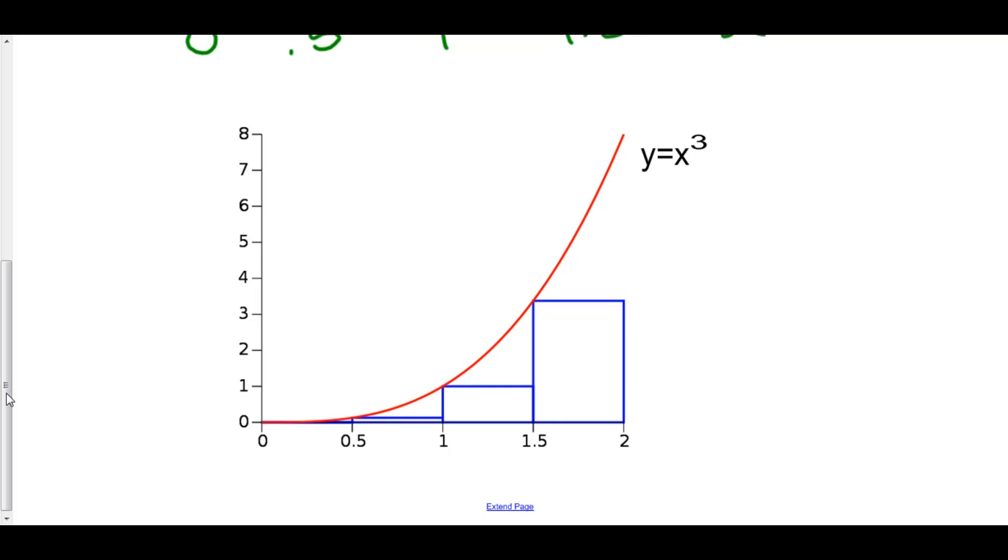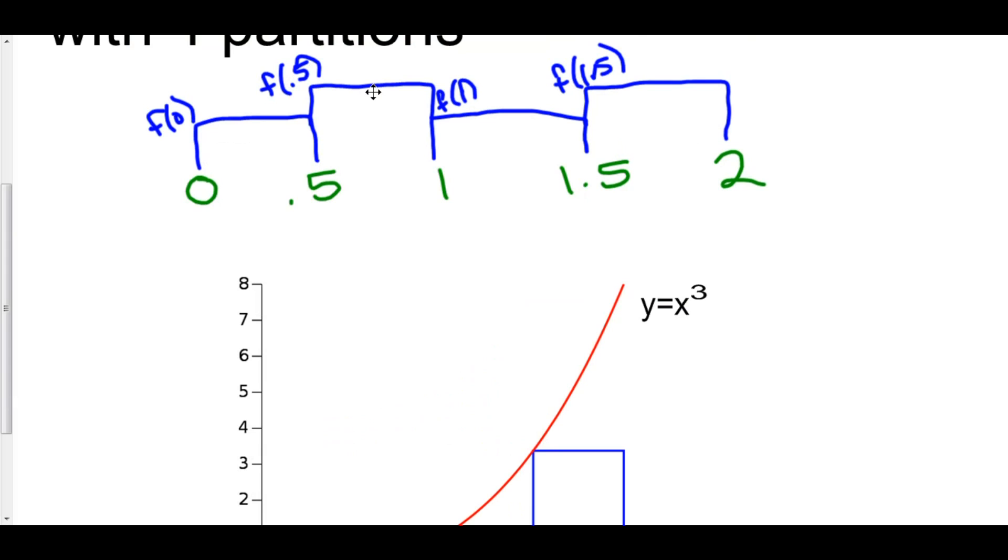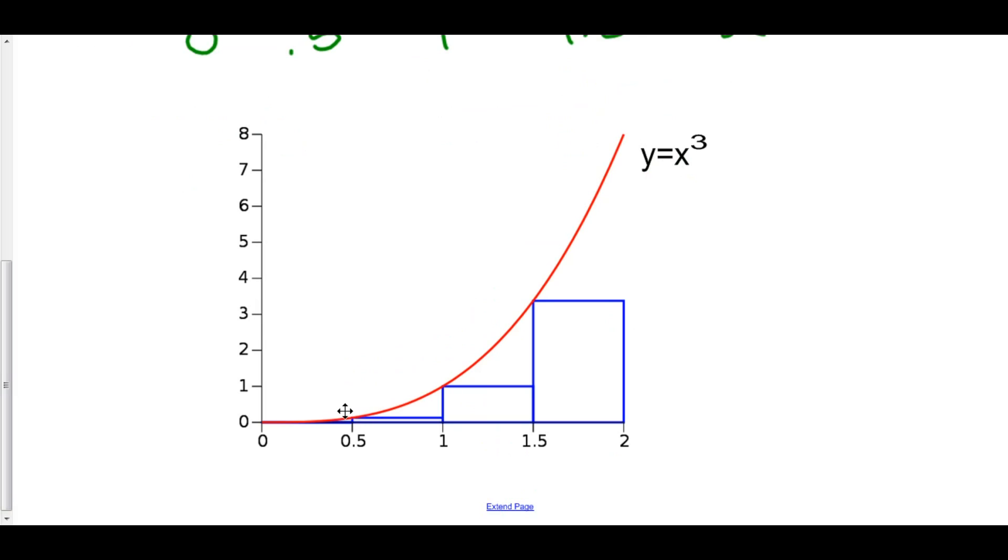So 0.5 will distinguish where our next rectangle is. And 1.5 cubed is 1.8, so this function value right here is 1.8, and that goes all the way over. So the height of my second rectangle is 1.8.